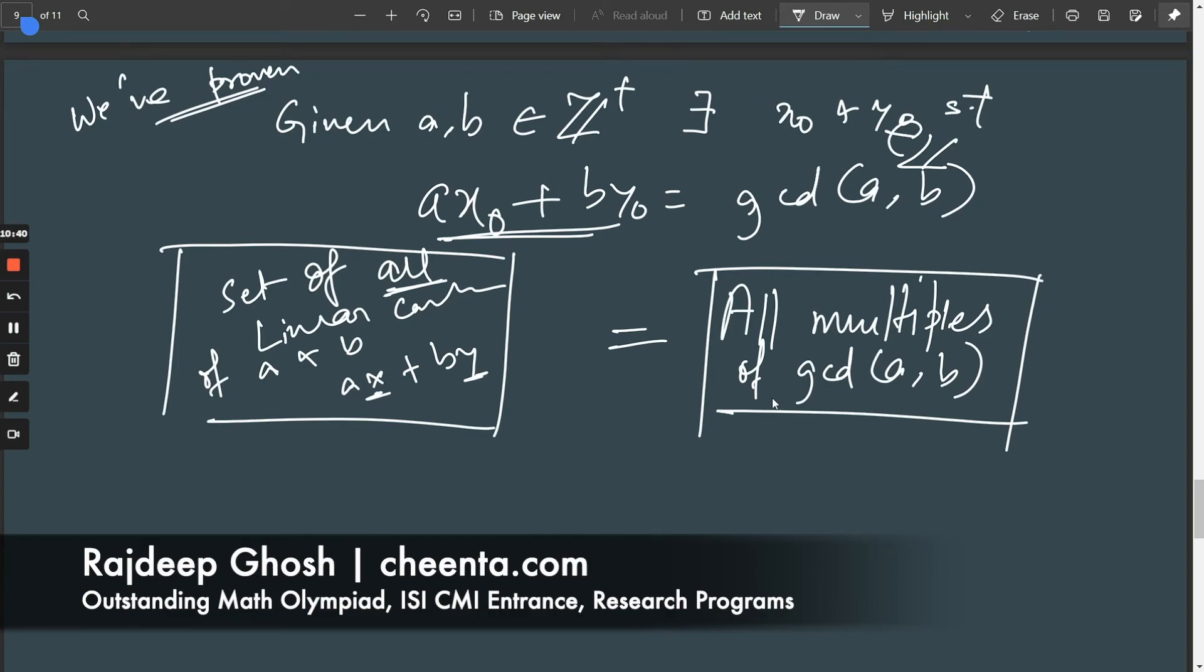And that's it. This actually simplifies a lot of the linear equations that you'll see. You'll run into things called Diophantine equations, which are just like a fancy word for a number theoretic equation of a certain kind. And these ideas are actually very helpful while solving Diophantine equations. So the main idea is that you can actually write gcd(a,b) as a linear combination ax0 + by0.